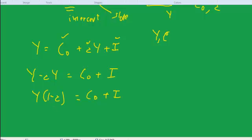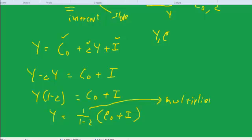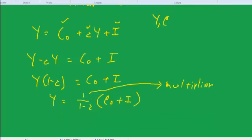And then I'm going to move the 1 minus c over here by dividing. And I'm going to write that this way: 1 over 1 minus c times C0 plus I. And this term here, the 1 over 1 minus c, is called the multiplier.